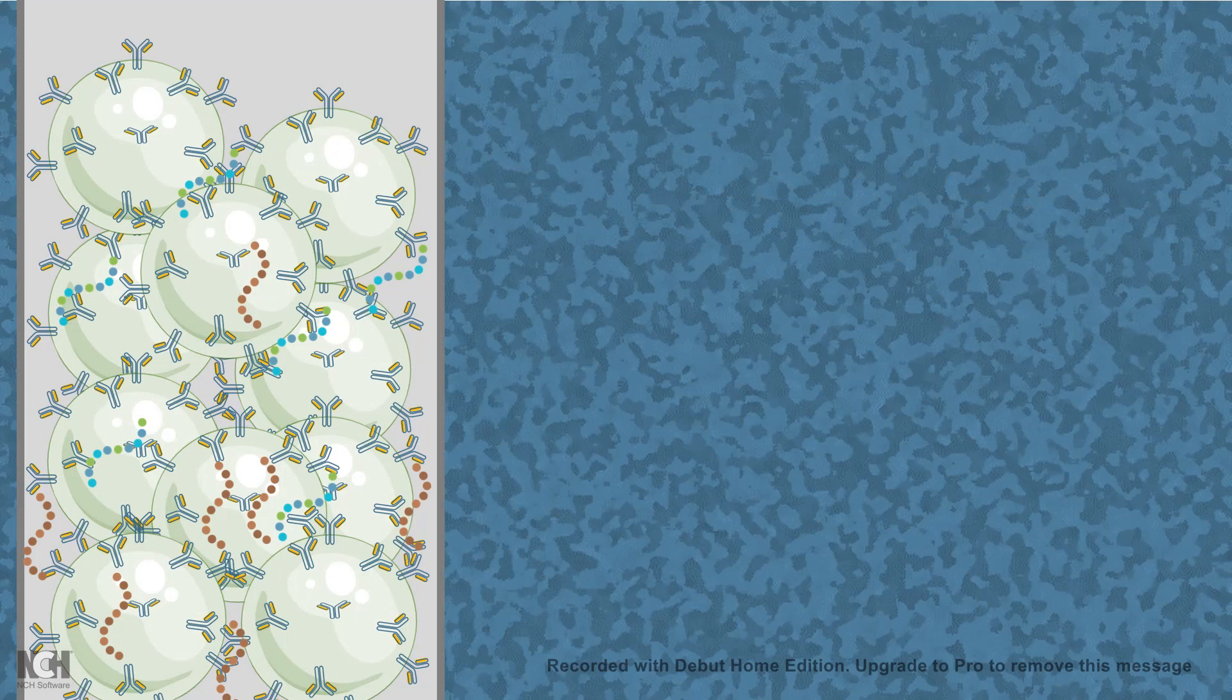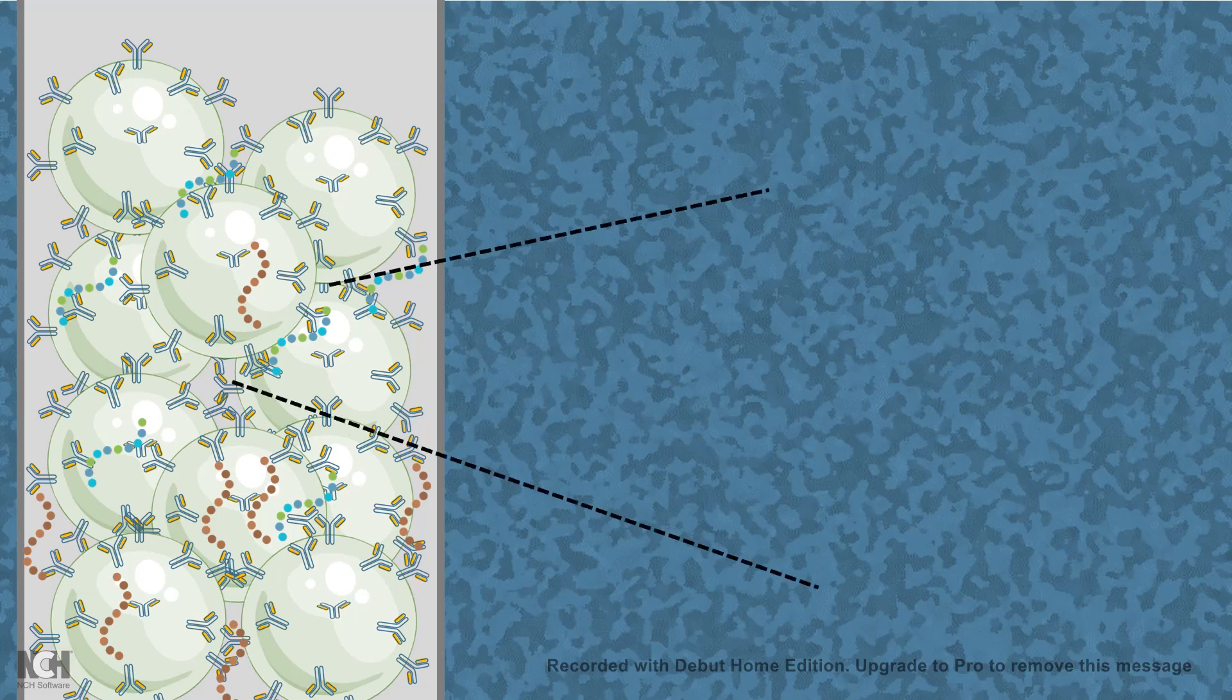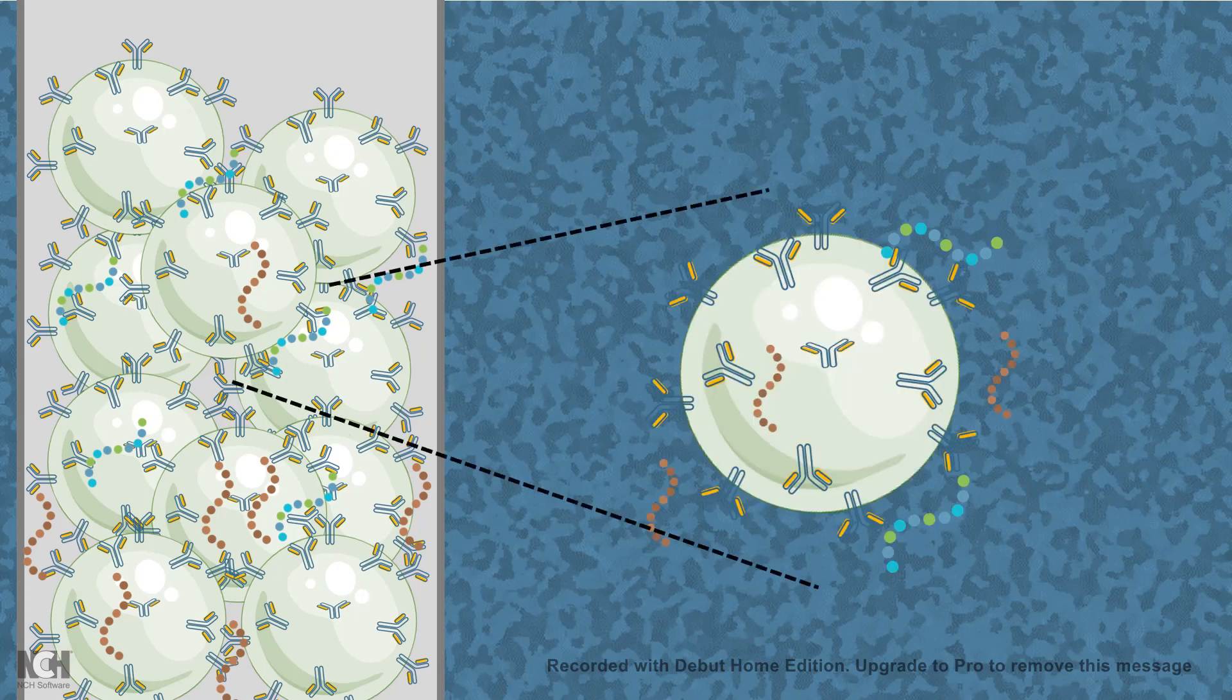Now affinity purification is based on the affinity column. This column is packed with beads. Let's take a simplest example. Here the bead is associated with several antibodies which are destined against this particular protein which is bluish in color.